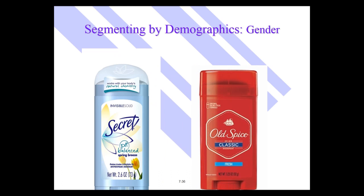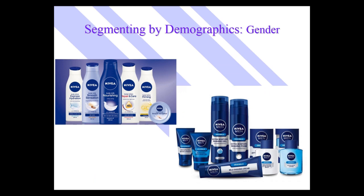Antiperspirants: Secret is targeted to women; Old Spice is targeting men. Clearly the fragrances are different, but a lot of the other ingredients are the same. Nivea has had a whole line of personal care products historically targeting women, but they came out with an entire line called Nivea Men — basically the exact same products, just in packages that say Nivea Men. So demographics is clearly a variable that's used.